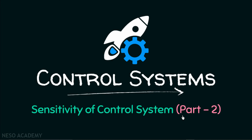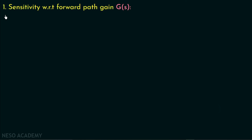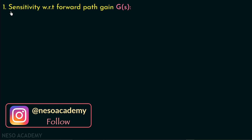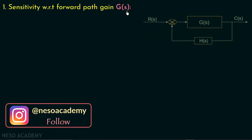In this presentation we are going to discuss part 2 of sensitivity of control systems. In the previous lecture we discussed the sensitivity of an open loop system. Now in this presentation we are going to discuss the sensitivity of a closed loop system with respect to forward path gain G.